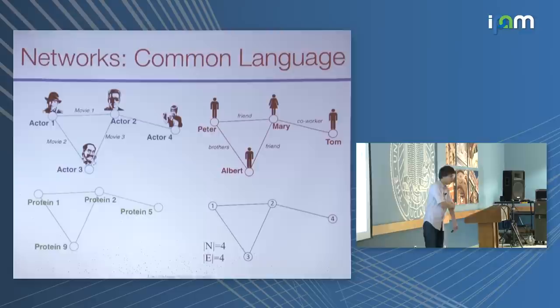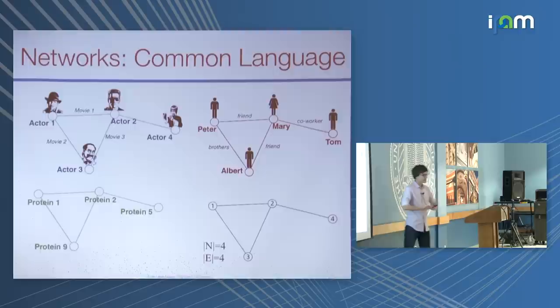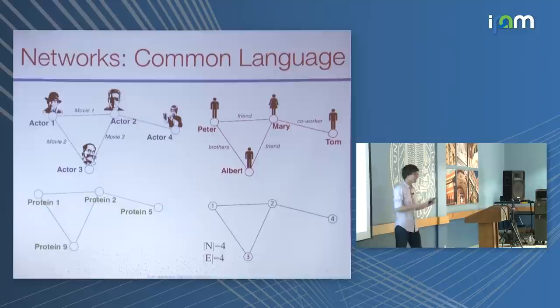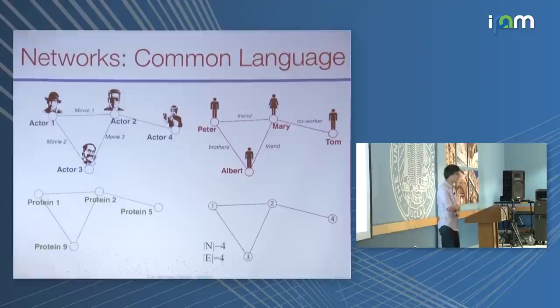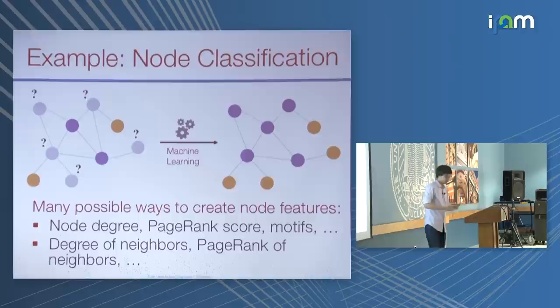Why do I like networks? The reason is because they allow me to develop methods that can be applied to many different domains. I see networks as a very nice and natural representation or data model for data coming from different domains. We've seen this throughout all the talks, emphasizing that it doesn't really matter what kind of network you are looking at — at the end you have the same underlying representation. I'll be working with graphs, and these graphs can be of actors, people, proteins — you name it.